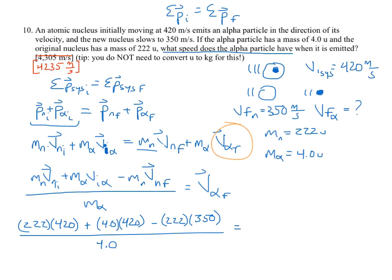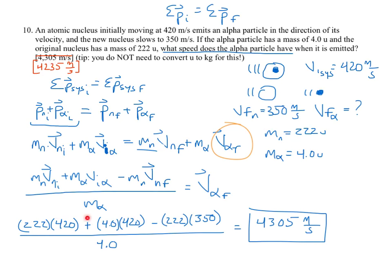And I get an answer of 4,305 meters per second. Wait — that's actually the original answer on the sheet. I'm not sure why I said earlier there was a typo. Maybe a different version had 4,235, but the correct answer is in fact 4,305, which is what you had on your sheet. So thanks for following along. That was Conservation of Momentum — MV initial equals MV final for all the parts. If you have any questions, come see me. Thanks for following along; I'll see you on the next one.